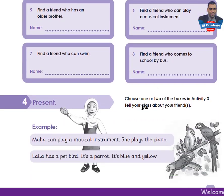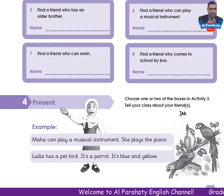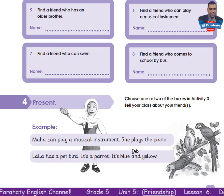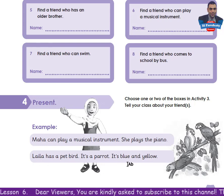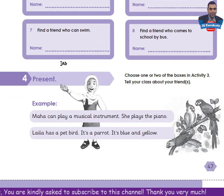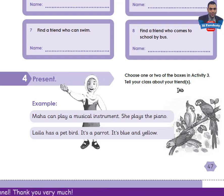When you finish this activity, it will be easy to do Activity 4: Present. Choose one or two of the boxes in Activity 3 and tell your class about your friend or friends. After finishing Activity 3, try to tell your class about your friends in a kind of mini-presentation, like the example here. By this, we've achieved the aims of this lesson. Thank you for following me. See you soon in another lesson. Goodbye.